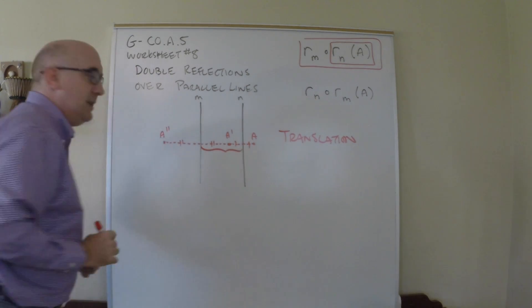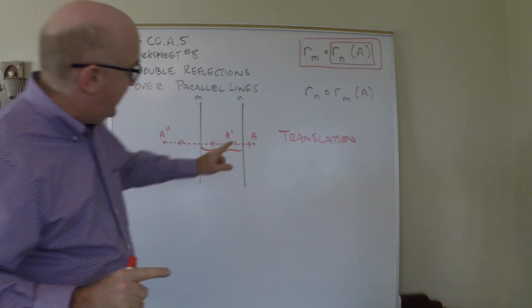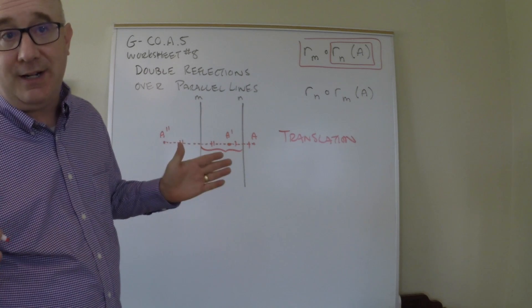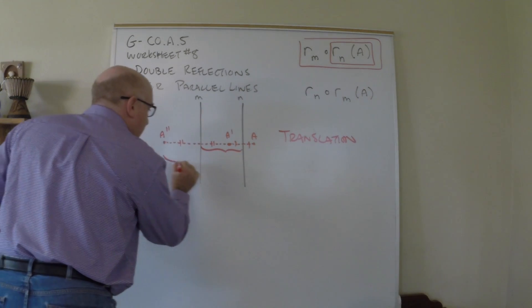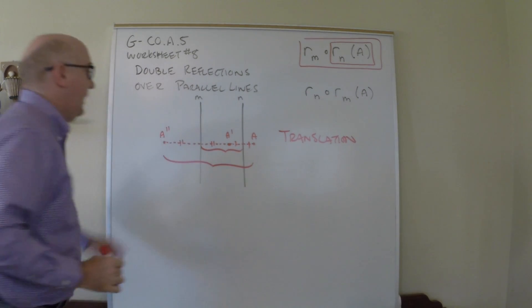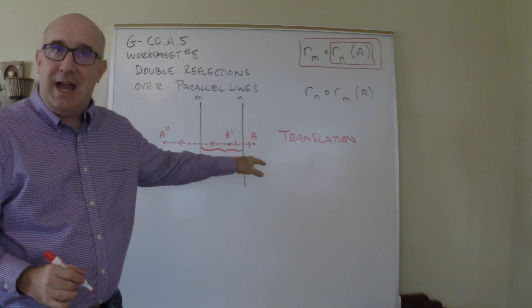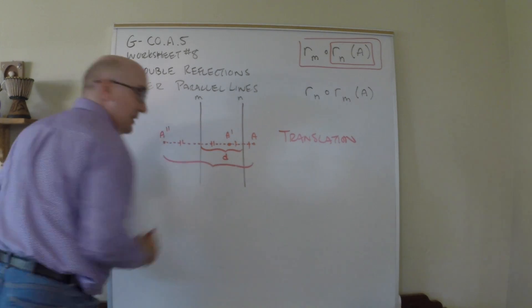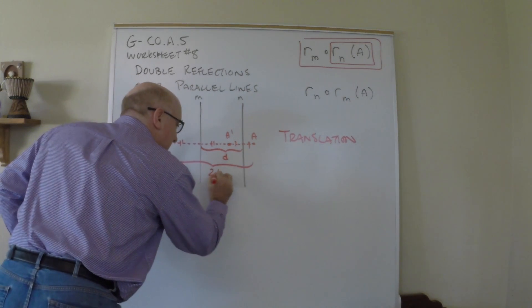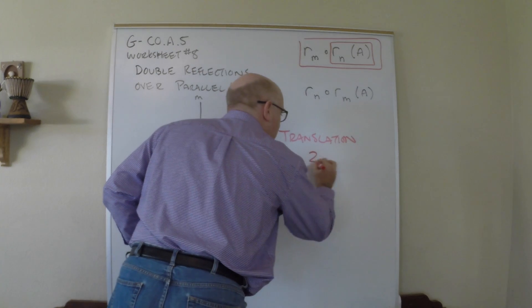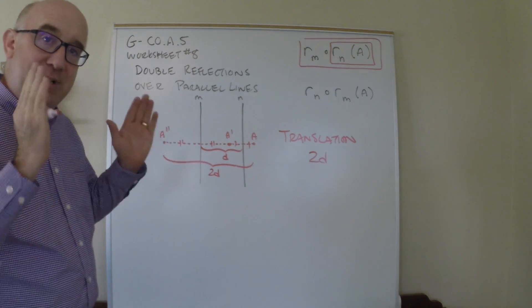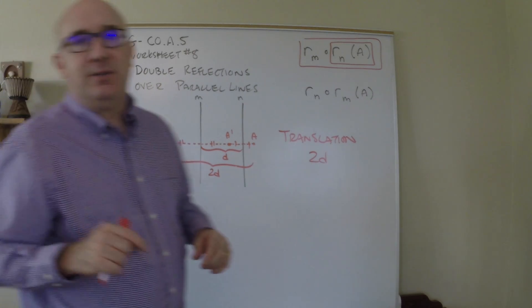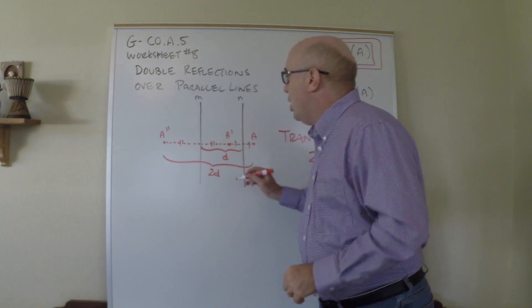How far does this point move? The distance between the two parallel lines is one single dash and one double dash. Notice that the total distance is two double dashes and two single dashes — exactly double. So whatever this distance is, call it d, the translated distance will be 2d — exactly double the distance between those parallel lines.